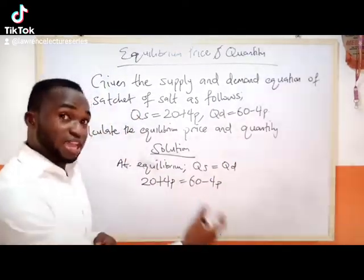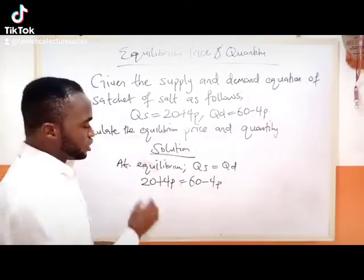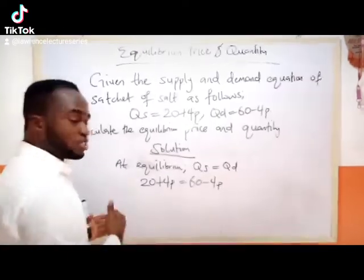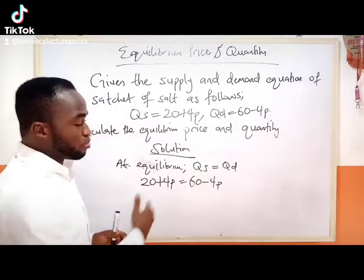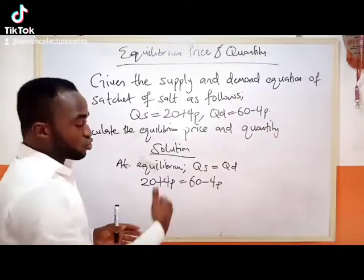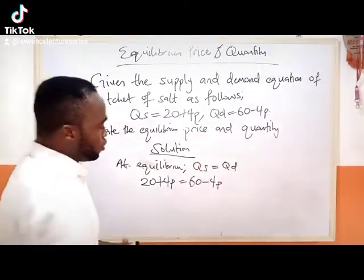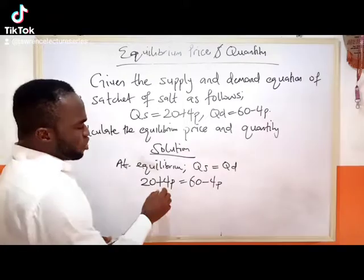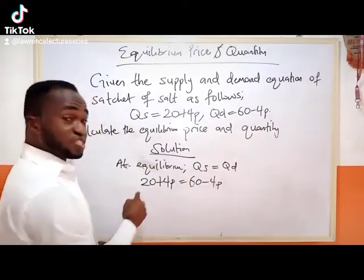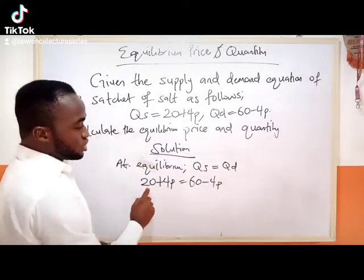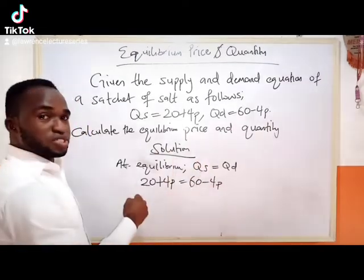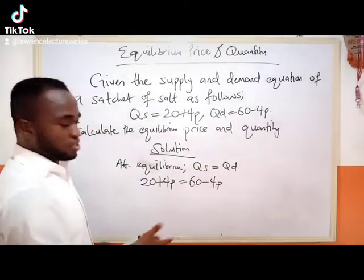Now we collect like terms. Collecting like terms means all the numbers will be on one side of the equal sign, and the unknowns — 4p and 4p — will also be on one side of the equal sign. We take the 20 to this side, and we take the minus 4p to this side. When 20 crosses, it takes a negative sign. When 4p crosses, it takes a positive sign.